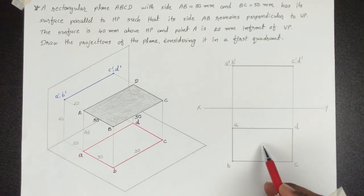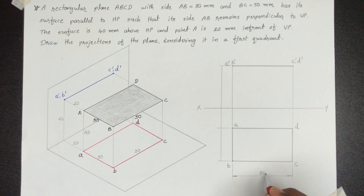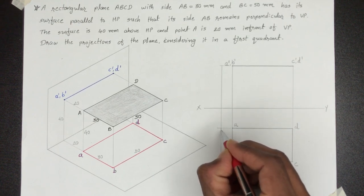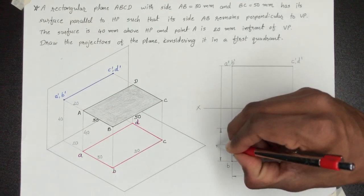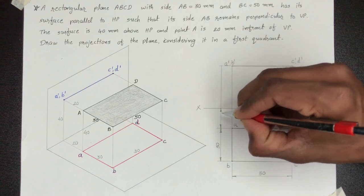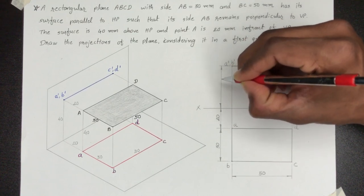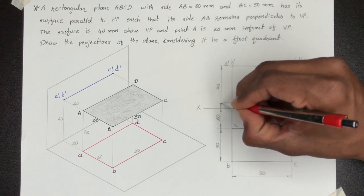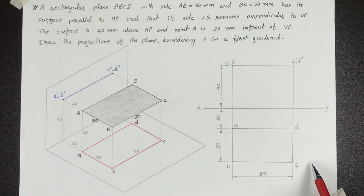इसको हम dark line से represent करेंगे क्योंकि यह plane का front view है. Plane का front view और top view draw करने के बाद आपको यहाँ पे dimensions show करने हैं: BC = 50 mm, AB = 30 mm, Point A is 20 mm in front of VP and 40 mm above HP.